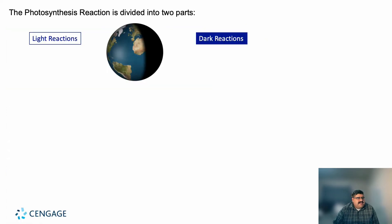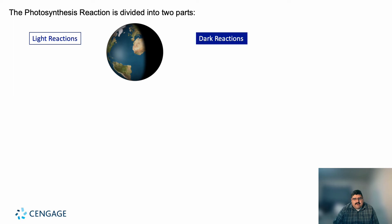Photosynthesis occurs in two main steps: one is known as the light reaction, and the other is known as the dark reaction. The light reaction requires light; the dark reaction does not actually require any light.